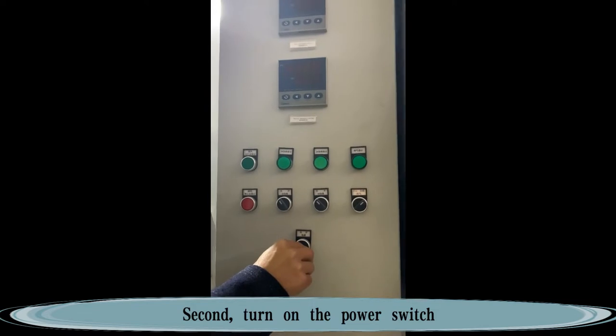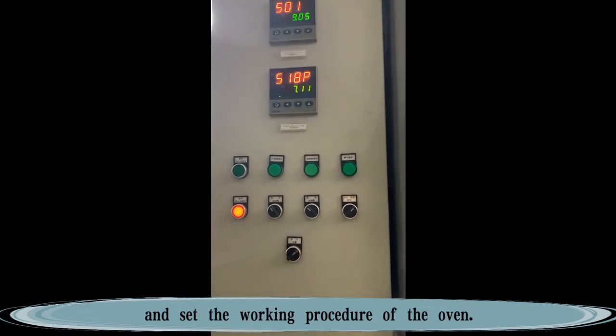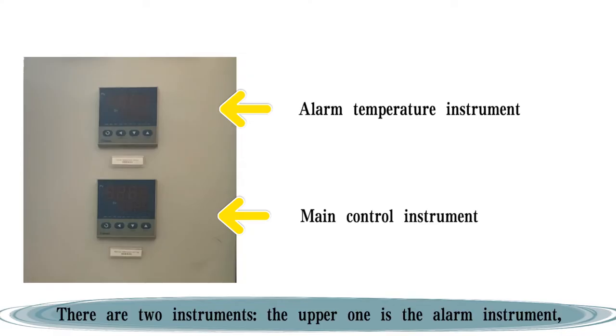Second, turn on the power switch and set the working procedure of the oven. There are two instruments.